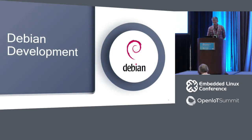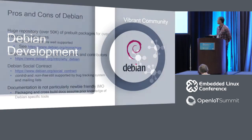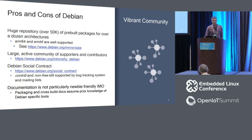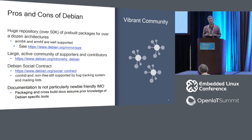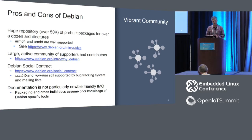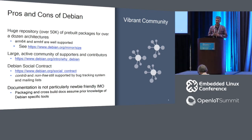Debian has a huge repository of pre-built packages. If you're trying to get up and running quickly, this is the benefit people have seen with Raspberry Pi and many developer boards — you don't have to build everything from scratch or endure a nine-hour build time. You can apt-get install everything you need. Many things are pre-packaged, at least the dependencies are there, and that's huge for prototyping.